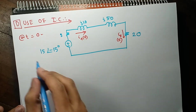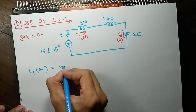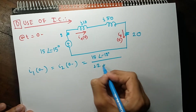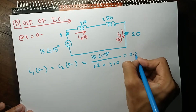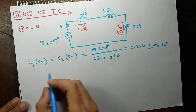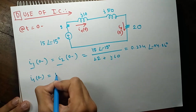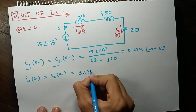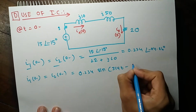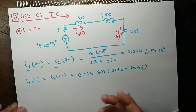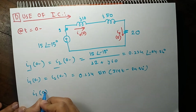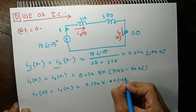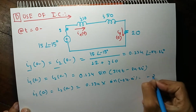Applying our analysis method: I1(0⁻) = I2(0⁻) = 15∠−15° / (2 + 20 + j60) = 15∠−15° / (22 + j60). That gives 0.234∠−84.86°. The current equation at T = 0⁻ is 0.234·sin(314·0 − 84.86°). Putting T = 0: I1(0⁻) = I2(0⁻) = 0.234·sin(−84.86°) = −0.233.